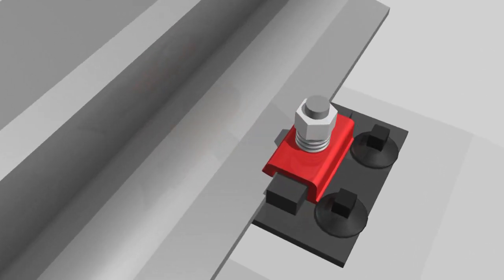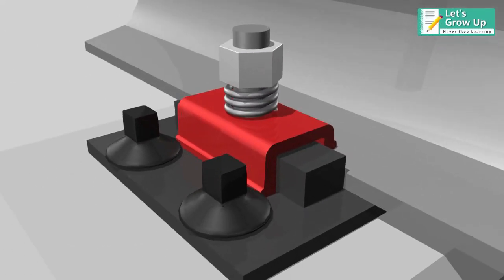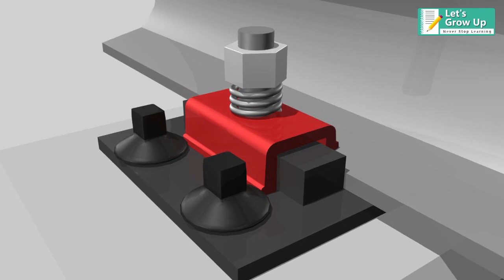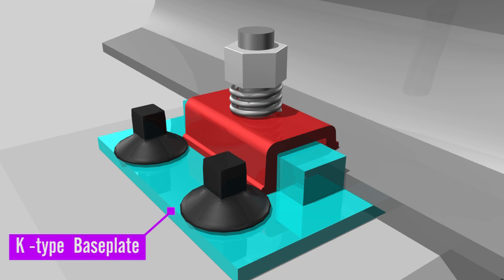Now, let's learn the different components of KPO clip fastening system. KPO rail fastening system is made up of K-type baseplate. Baseplate size varies for different rail sections.